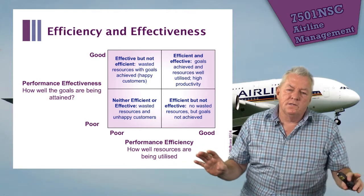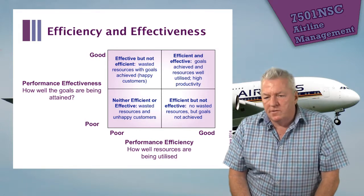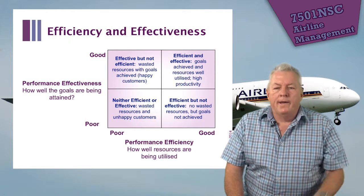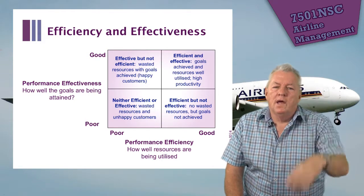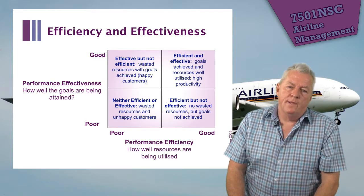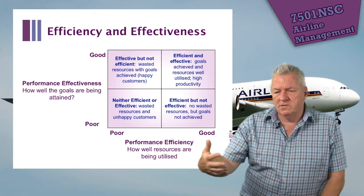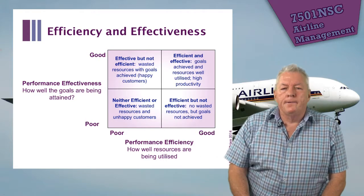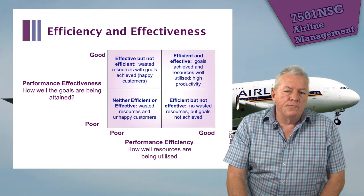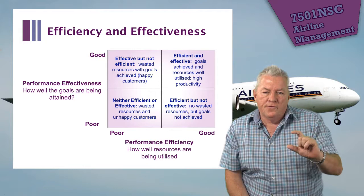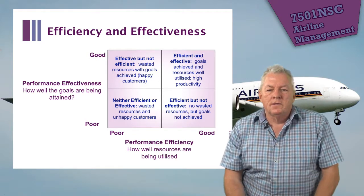Plotting efficiency against effectiveness on a matrix illustrates the relationship. You could run the most efficient airline in the world but have no customers because your effectiveness is poor. Conversely, traditional airlines were very effective — providing seamless, excellent service from check-in to arrival — but they weren't efficient, with people everywhere. Both efficiency and effectiveness must be treated as a collective and compared against each other.